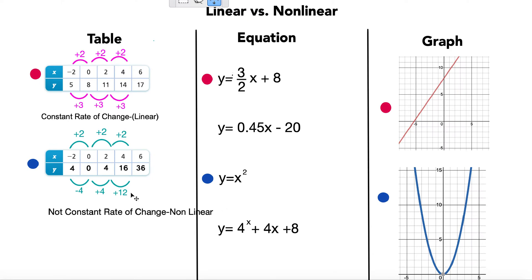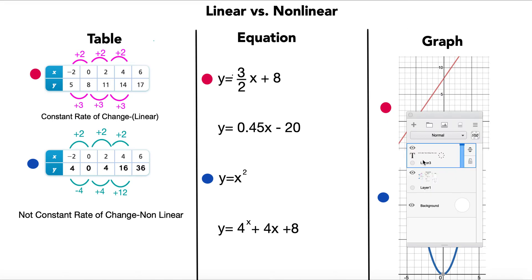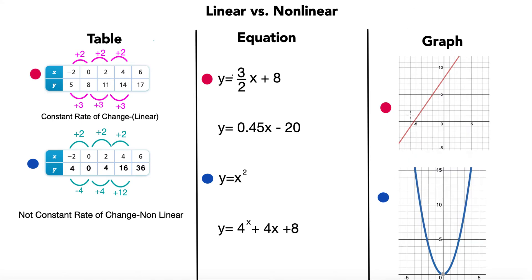And the hardest way, I think, for you to see this is gonna be both in a table and equation. In a graph, it's gonna jump out at you. And we'll get to the graphs. That's why I saved them for last, because I think they're the easiest. So table, constant rate of change, linear, not constant, not linear.